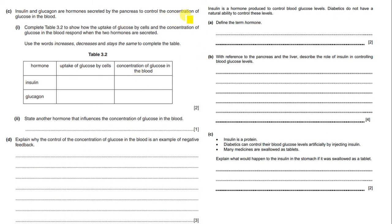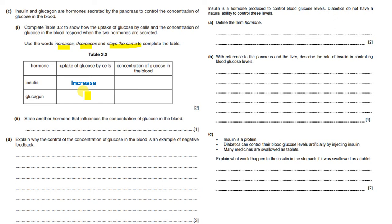Complete table 3.2 to show how the uptake of glucose by cells and the concentration of glucose in the blood respond when the two hormones are secreted, using the words increase, decrease, or stay the same. For insulin: uptake of glucose by cells will increase, and glycogen concentration will decrease. So insulin increases glucose uptake, and glycogen decreases.